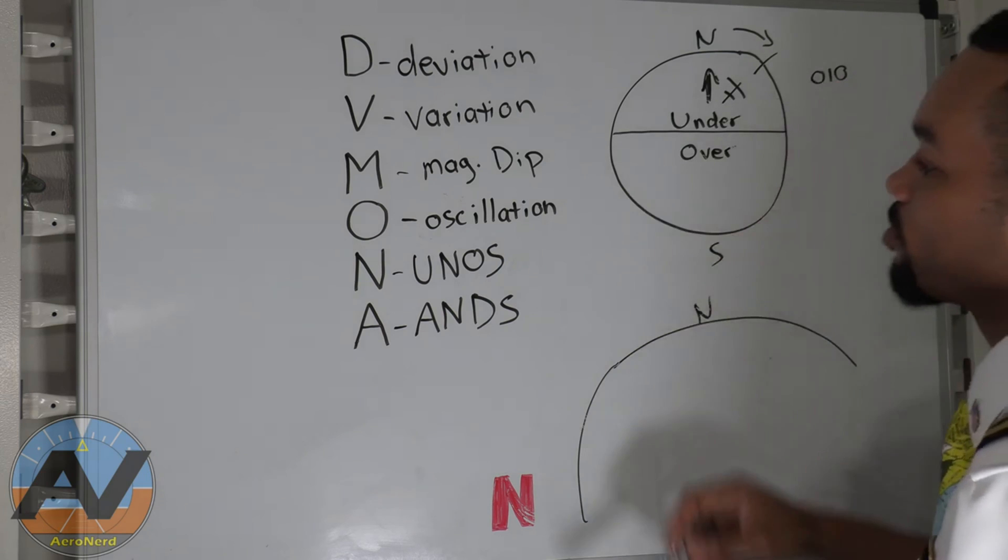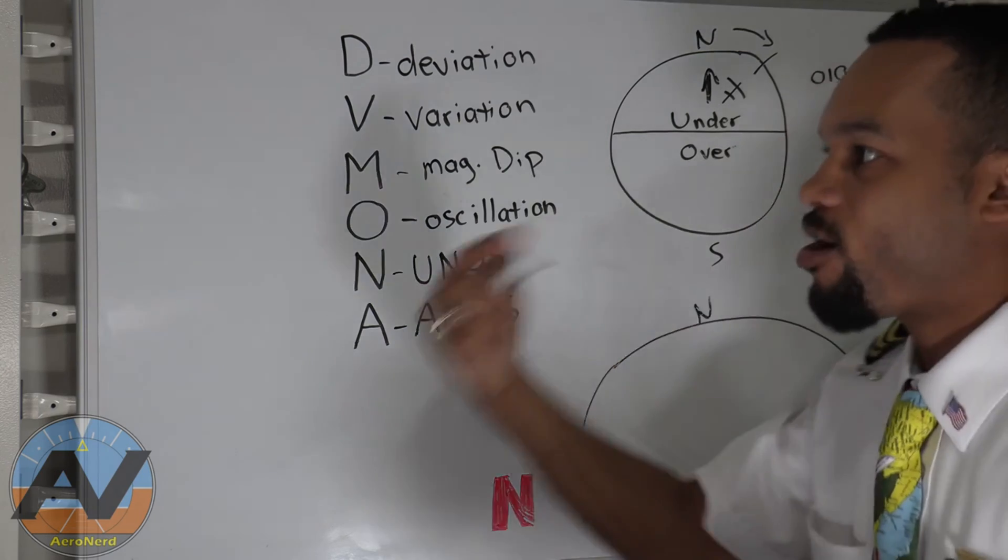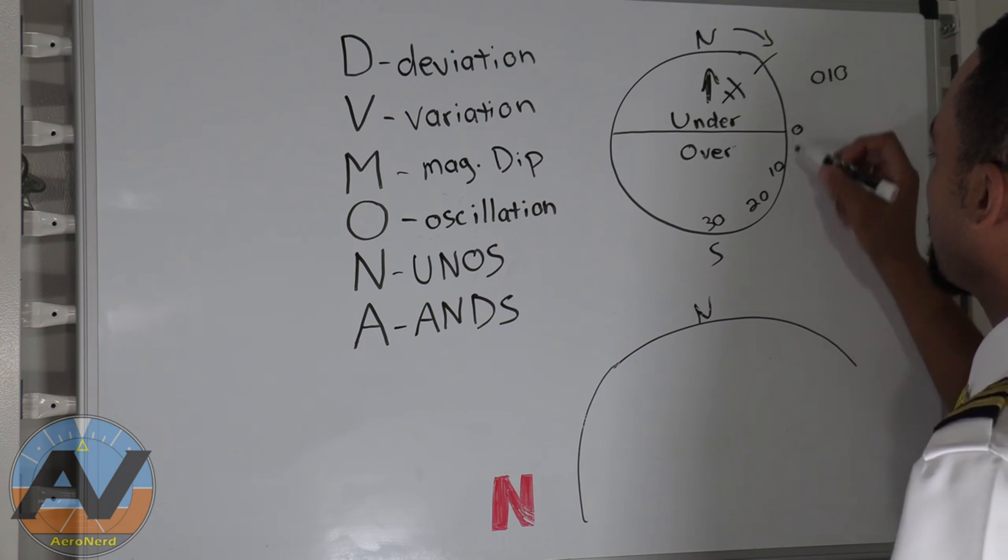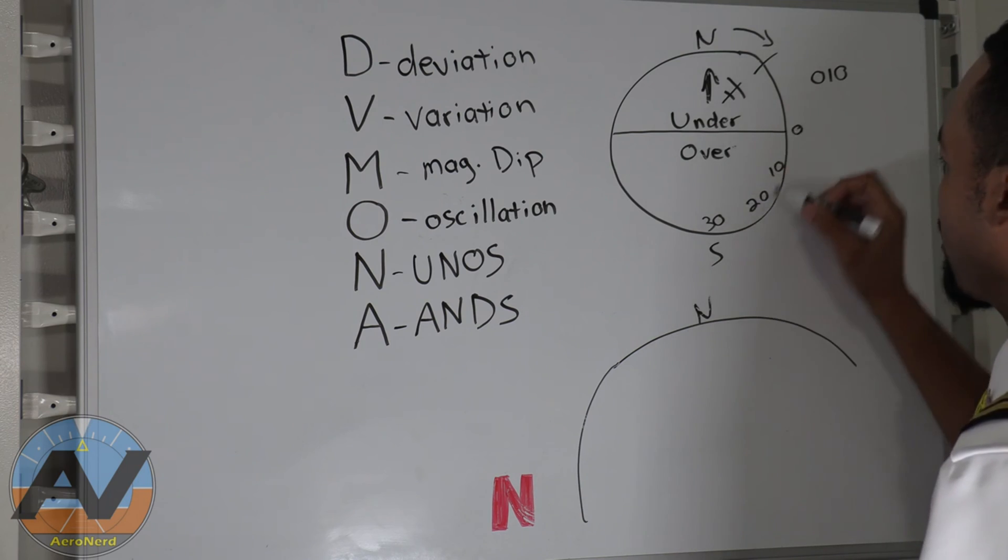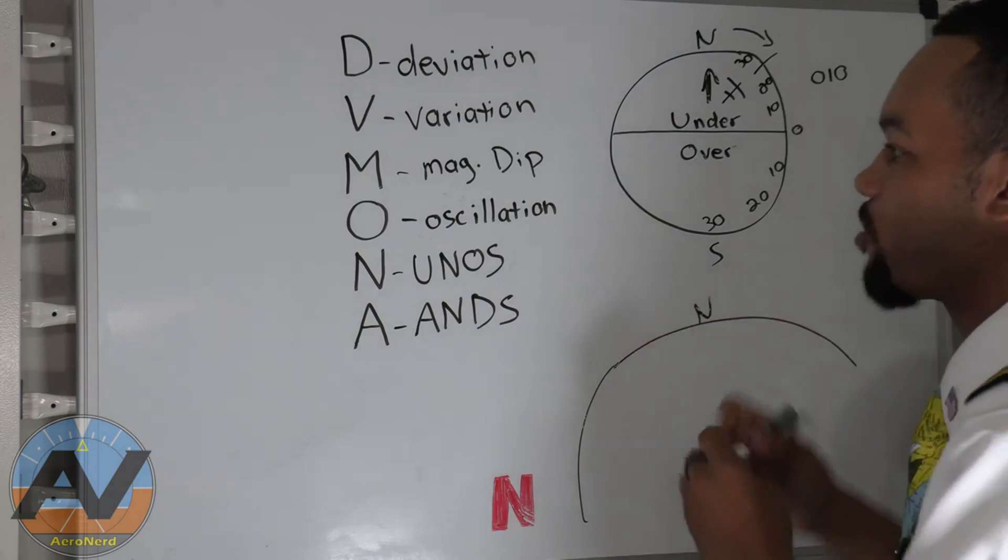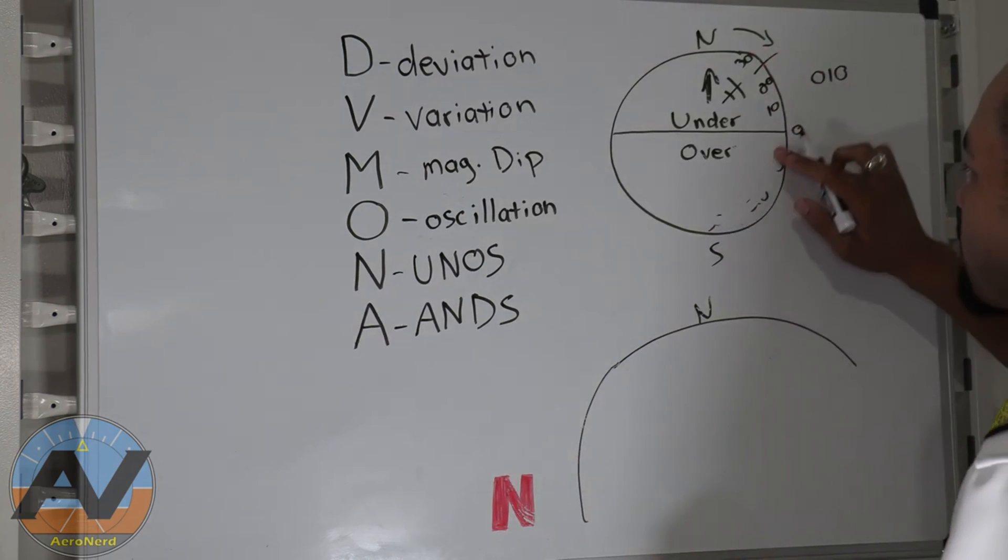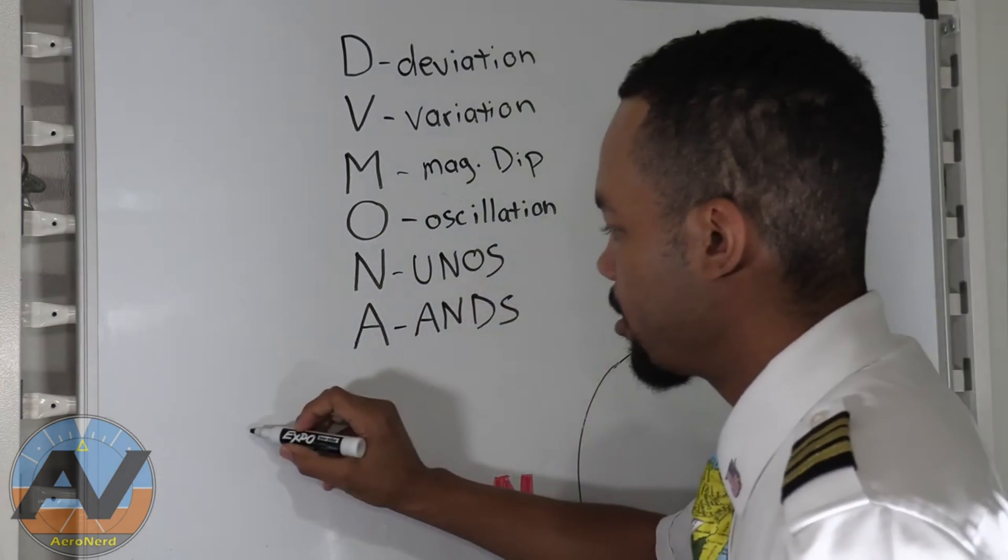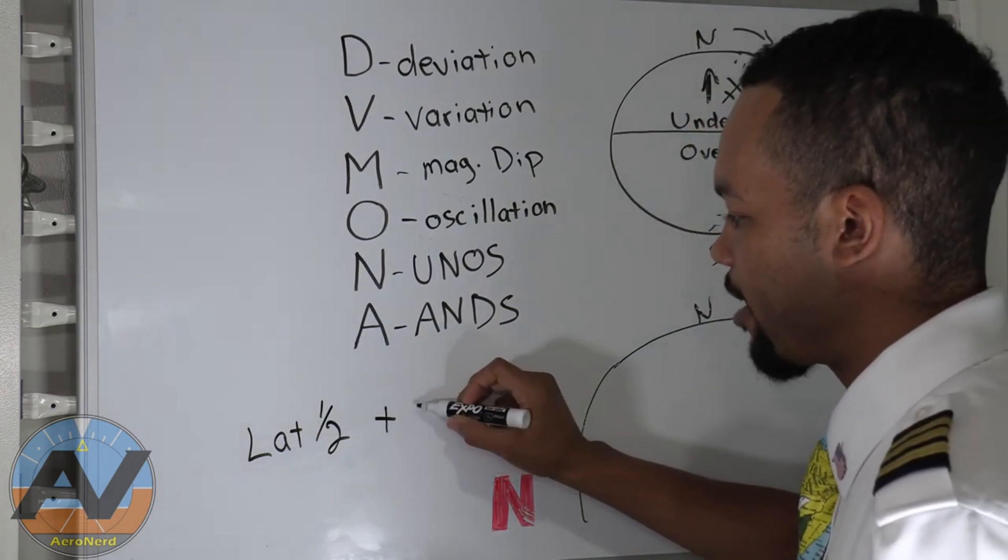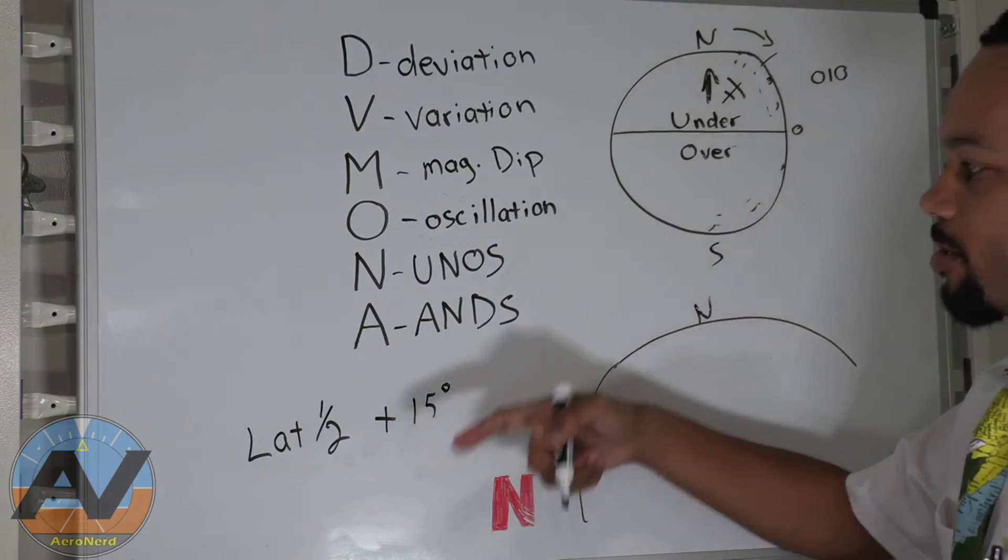That's why it says undershoot north, overshoot south. Now there are some tips on how much do you overshoot or undershoot. You may see 30, 20, 10, 0 degrees based off the heading. I don't really like using this method because this changes depending on what latitude that you're at. How you can find this out is by doing a simple little equation here. It's your latitude, divide it in half, and then you add 15 degrees. That's literally how you get how much you have to overshoot and undershoot.